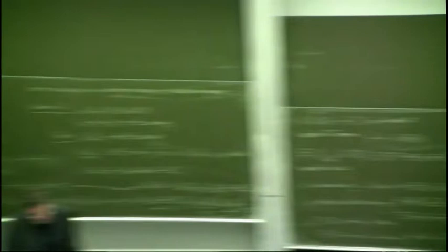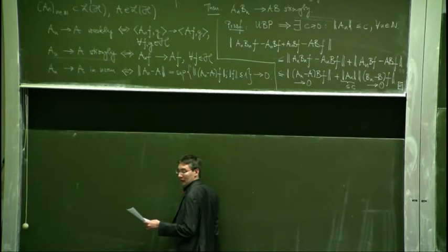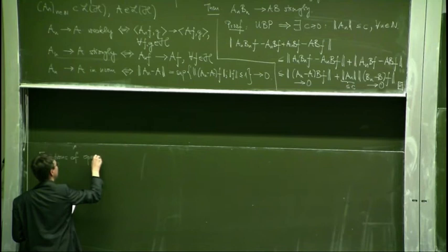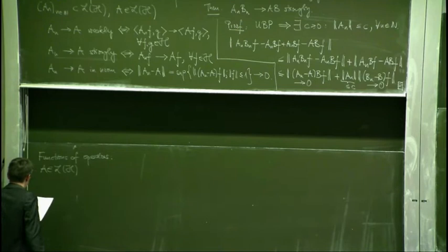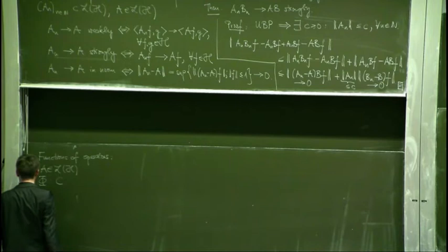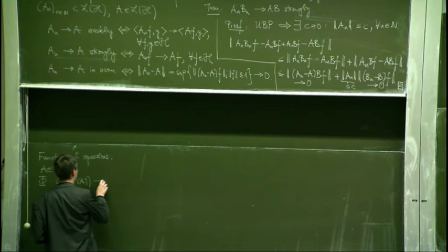Using the spectral theorem we can define functions of operators. For the bounded case, assume A is a bounded self-adjoint operator. There is a functional calculus providing a map φ from continuous functions on the spectrum of A to the bounded operators L(H), which is also unique.